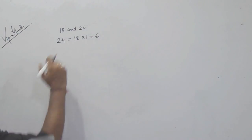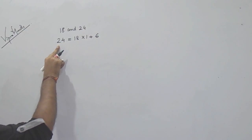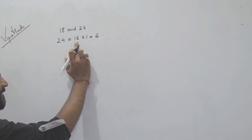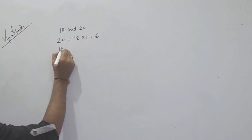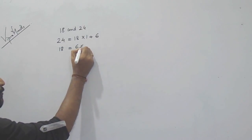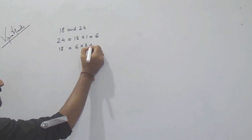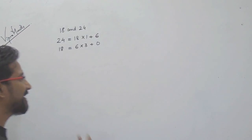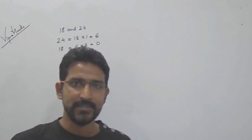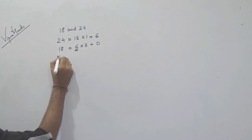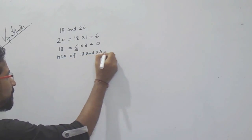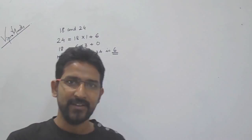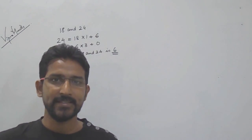In the next step, we again write in the same format: dividend equals divisor into quotient plus remainder. From the previous divisor and remainder — 18 and 6 — the bigger number is 18. So 18 equals 6 into 3, which is exactly 18, and the remainder here is 0. When you get remainder 0, check the divisor — the divisor here is 6. So the HCF of 18 and 24 is 6.